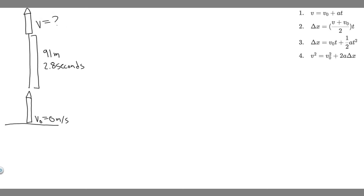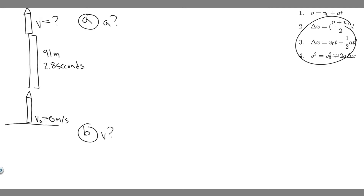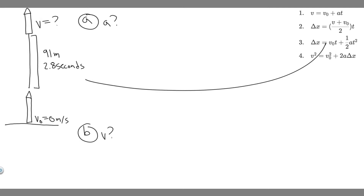We're trying to solve for two different things here. For A, we're trying to find the magnitude and direction of the rocket's acceleration. For B, we're trying to find the speed — what is its speed at this time? So we're trying to find acceleration and velocity, essentially. Let's go ahead and start with A. We're going to use kinematics — the kinematic equations — and plug in the information we're given in order to solve for it.